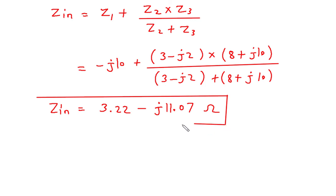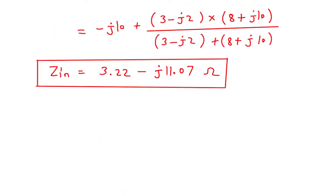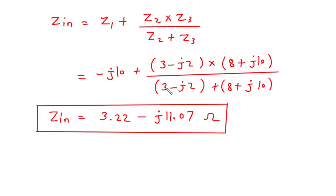So what we had to find was the input impedance of the circuit operating at omega = 50 rad/s. The final value of Zin = 3.22 − j11.07 ohms. Thank you.